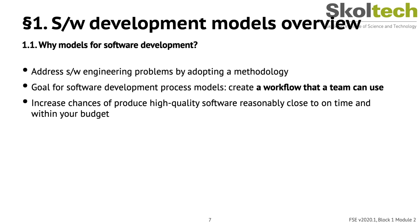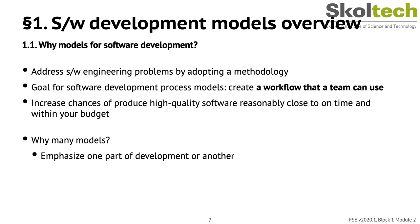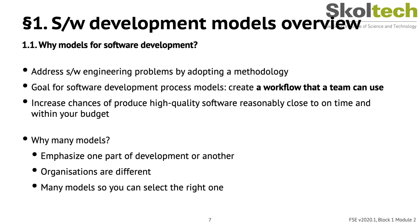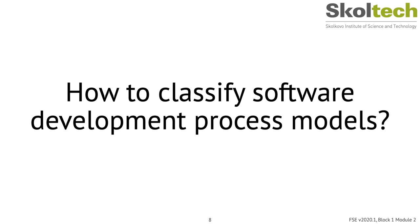Ultimately, your practical goal with a software development process model is to create a workflow that a team can use. This typically contributes to producing higher quality software, reasonably close to on time and within budget. You might ask: why are there so many models? The answer is they tend to emphasize one part of development or another — for example, agile methods allow a project's goals to change over time, or test-driven development forces programmers to write tests. Models are also tailored to the needs of an organization.